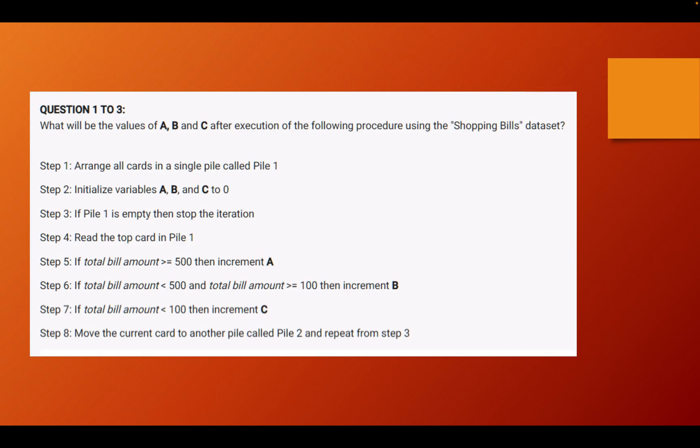This basically means that if you see anything less than 500, that is up to 499, and anything that is greater than or equal to 100, so from 100 to 499, if you see any bill amount total bill amount in that range you have to increment B.